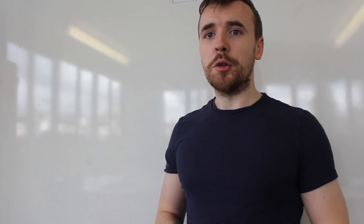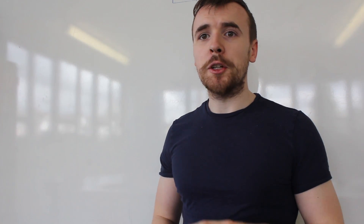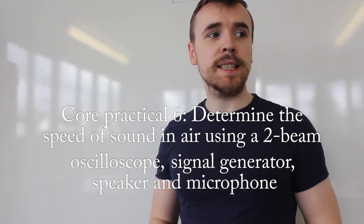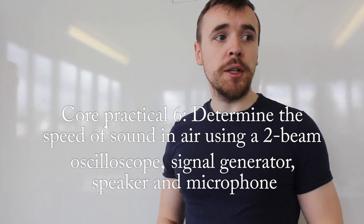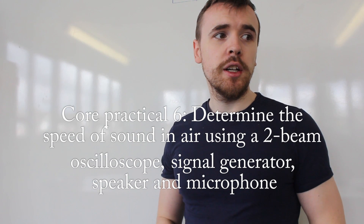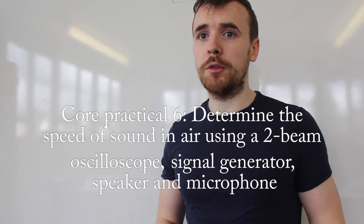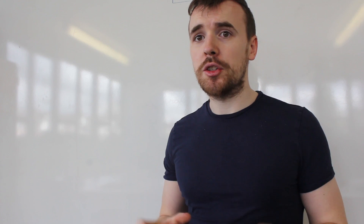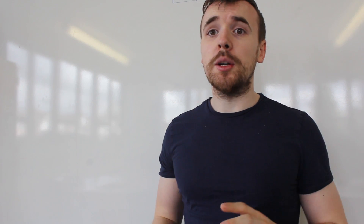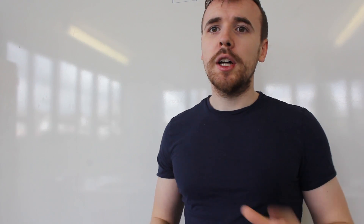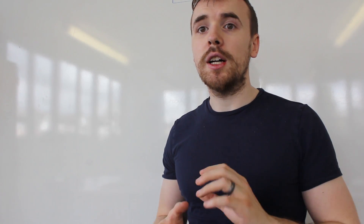In this video tutorial we're going to be covering CPAC 6, titled 'Determine the speed of sound in air using an oscilloscope, signal generator, speaker and microphone.' This is going to allow us to demonstrate the ability to use an oscilloscope as well as microphones, signal generators and speakers in order to generate waves in air.